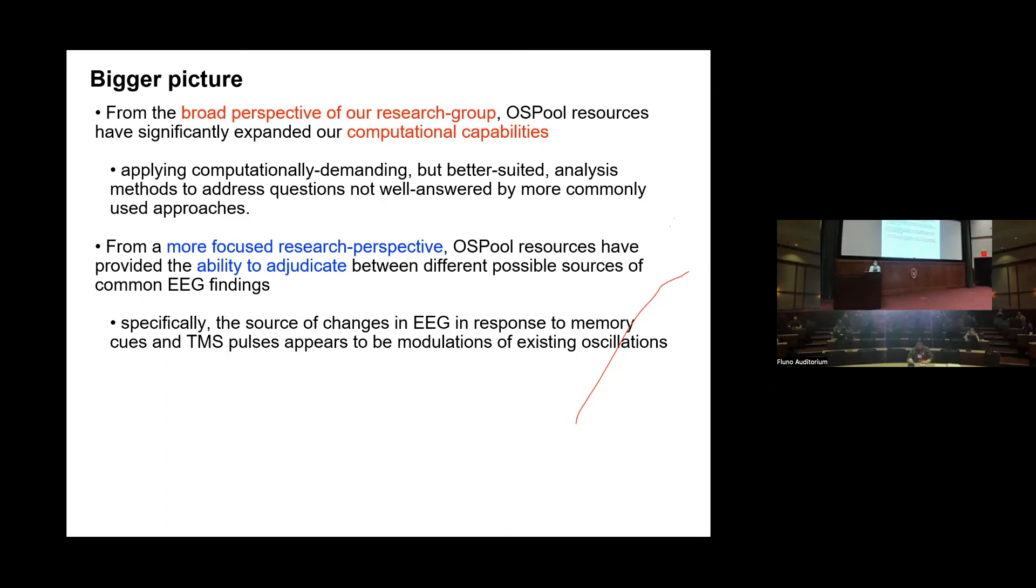From a more focused research perspective, the resources have provided the ability to adjudicate between different possible sources of EEG findings. Just to return to the science briefly, what we found so far in our analyses is that the source of changes in EEG in response to the memory cues and TMS appears to be modulations of existing oscillations. This is allowing us to help advance our field's understanding, address key questions in the grant that's funding the research, and provides the opportunity to reconsider other established findings.